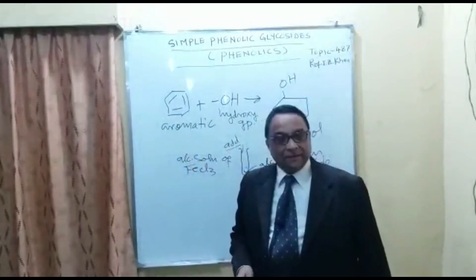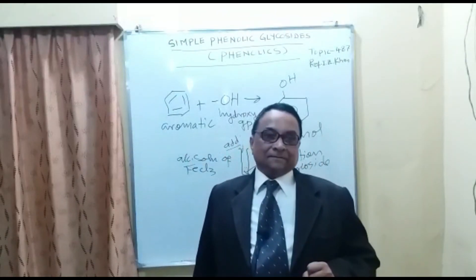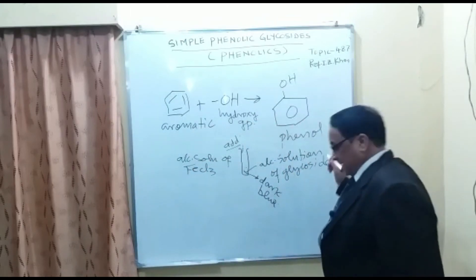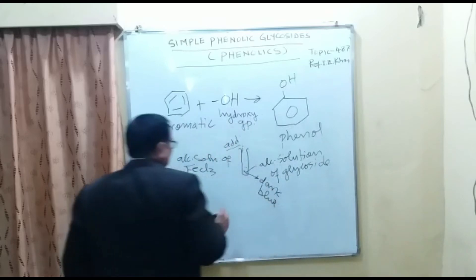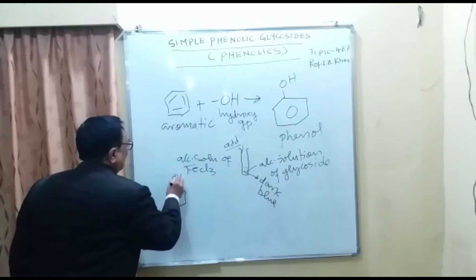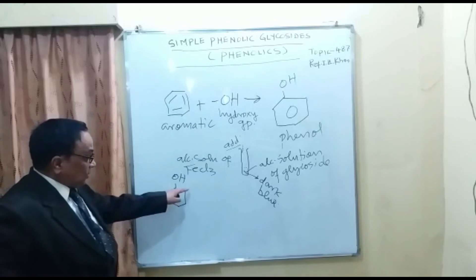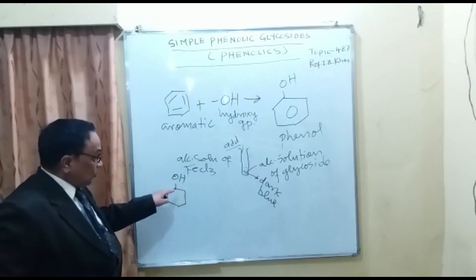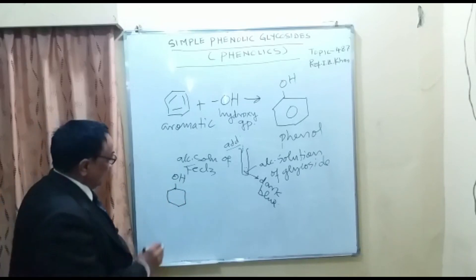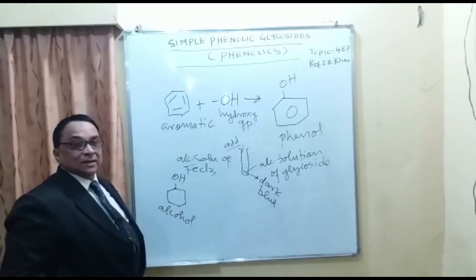What is the difference between phenolic and non-phenolic? Phenolic compounds are acidic in nature. For comparison, if the same hydroxy group is attached to a cyclohexane ring — which is not aromatic — and a hydroxy is attached to it, it is an alcohol. The name of that alcohol would be cyclohexanol.